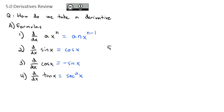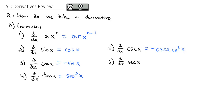We could also do the reciprocal formulas — let me just put those to the right. The reciprocal of sine is cosecant, so the derivative of cosecant of x is negative cosecant x cotangent of x. The derivative of secant of x is positive secant x tangent x. And finally, the derivative of cotangent of x is negative cosecant squared of x.